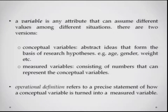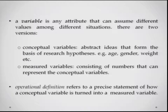When talking about a hypothesis, we are actually talking about the relationship between one or two variables. A variable is any attribute that can assume different values among different situations. For example, sleeping for a particular amount of time can take different values — you can sleep for 2 hours, 4 hours, 6 hours, you can have a disturbed sleep or a completely undisturbed sleep. So sleeping, or the amount of sleeping, can be a variable one would like to study in a particular research framework.